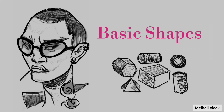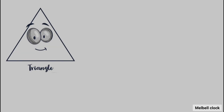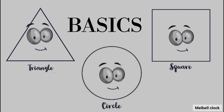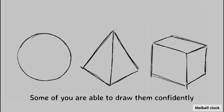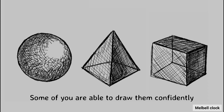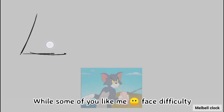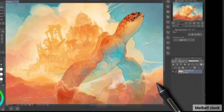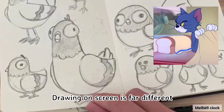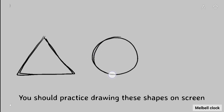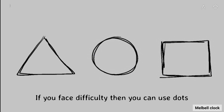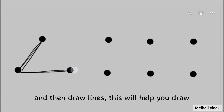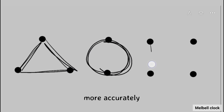For drawing, you must need to know how to draw basic shapes which is triangle, circle and square. Some of you are able to draw them confidently while some of you, like me, face difficulty while drawing these shapes. Drawing on screen is far different from drawing on paper. You should practice drawing these shapes on screen. If you face difficulty, then you can use dots and then draw a line. This will help you draw more accurately.